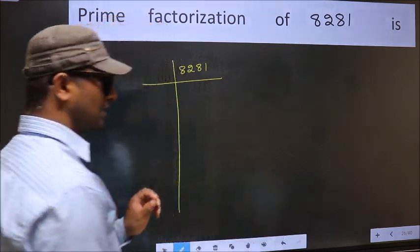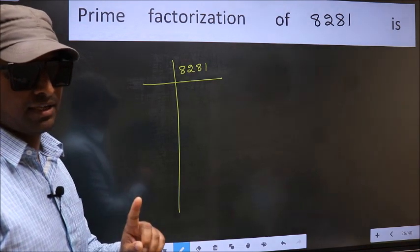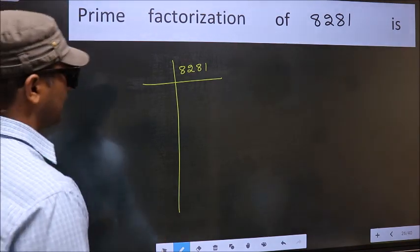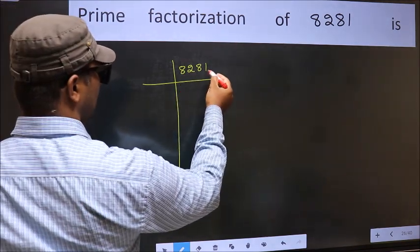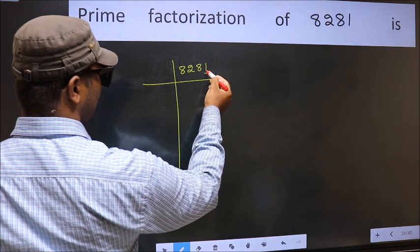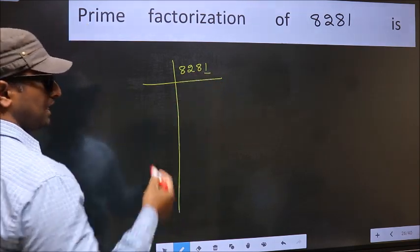This is your step 1. Next, in this number last digit 1 is not even, so not divisible by 2.